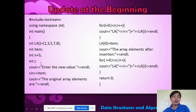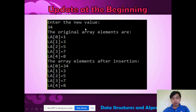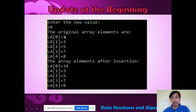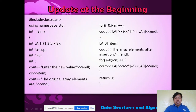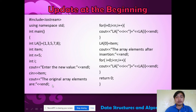Let us update at the beginning. When I say update, we modify the value. For example — enter the new value. Originally, the beginning element is 1. Since we update it to 34, the first element becomes 34. Here is the code: our original array, with an item variable to store the entered value. Then LA[0] is set equal to your item (34).